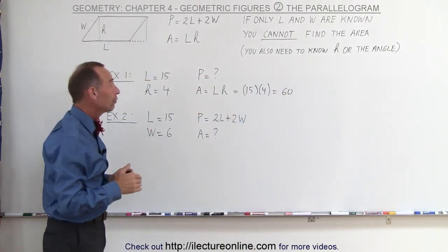In our second example, we're given the length of the long side and the length of the short side, L and W. Now, you can find the perimeter because you know both L and W, so in this case that would be equal to 2 times the long side, which is 15, plus 2 times the short side, which is 6, so that gives us 30 plus 12 or 42.